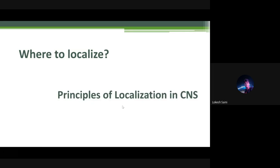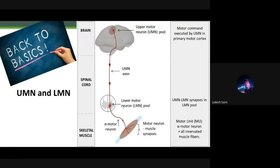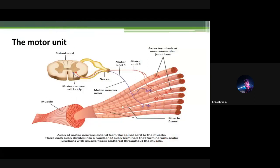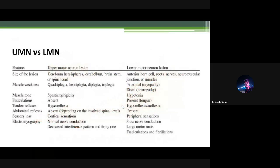Localization principles: when dealing with any child with weakness, both central and peripheral nervous systems can cause weakness. Based on this child's history, we can fairly localize to lower motor neuron type of weakness. The lower motor neuron consists of anterior horn cells, motor units, neuromuscular junctions, and then the muscle. Upper motor neuron can be fairly ruled out — there was hypotonia, hyporeflexia or areflexia, and abdominal reflexes were present.